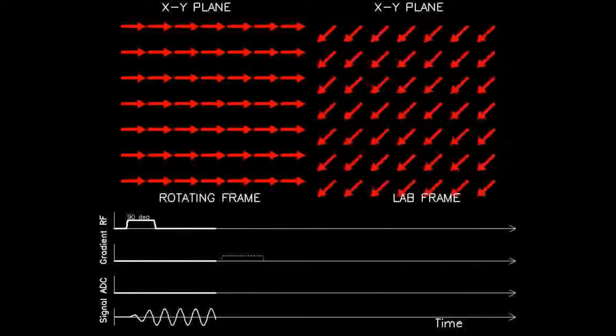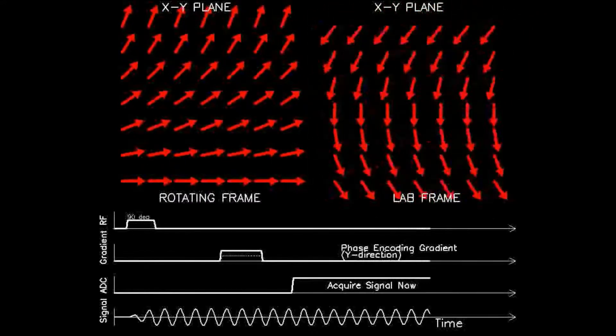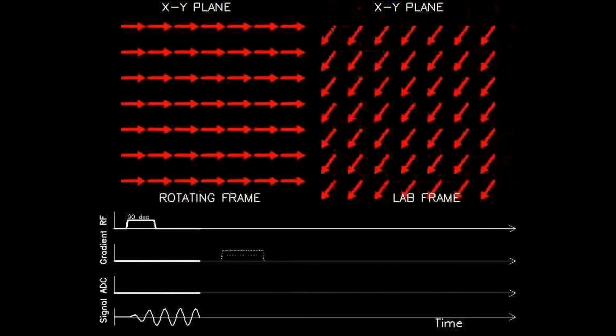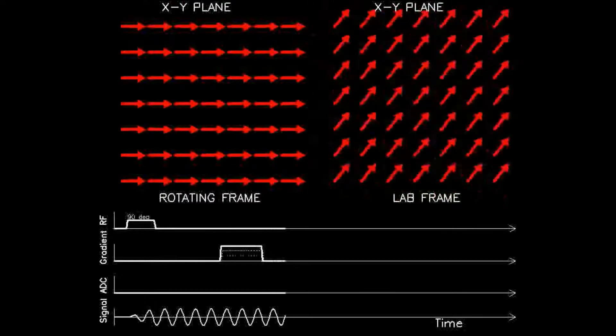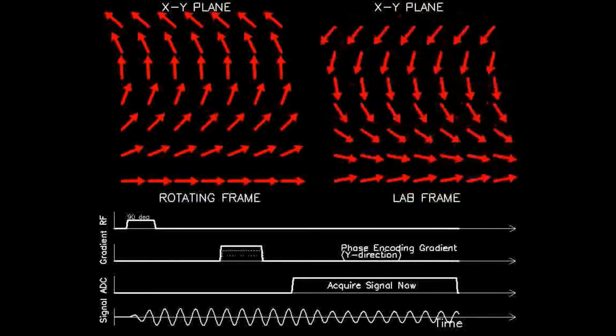Note for this example that the gradient is in the y-direction, whereas it was in the x-direction for the previous frequency encoding example. Application of the gradient causes a slightly larger z-magnetic field towards the top and a slightly smaller z-magnetic field towards the bottom.